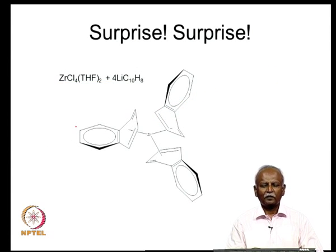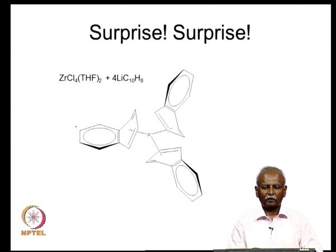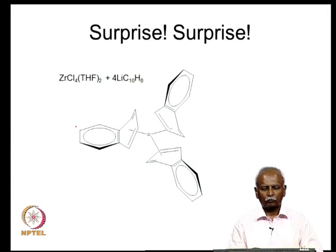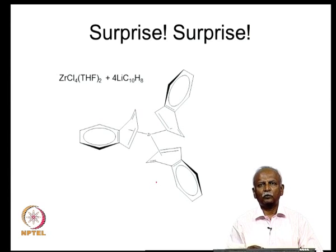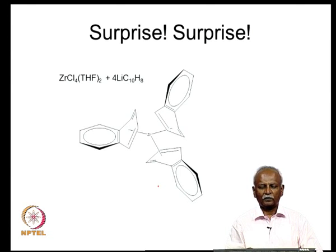There are surprises: a reaction which should have generated the bis-naphthalene zirconium compound surprisingly generates a very strange compound where you do not have an arene ring, but the naphthalene has lost its aromaticity in one of the rings. Two double bonds or a conjugated diene system is now coordinating to the zirconium. This can be understood because if you have two naphthalenes surrounding zirconium, you still do not have enough electrons, leading to the formation of a trimeric tris-naphthaleno zirconium.